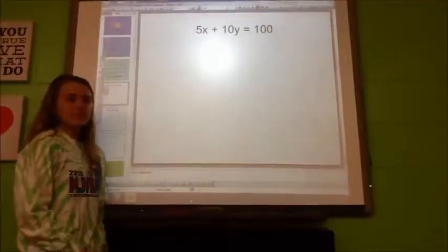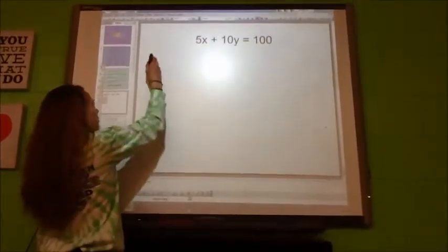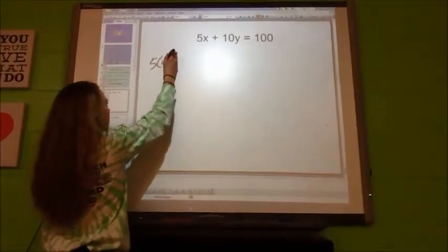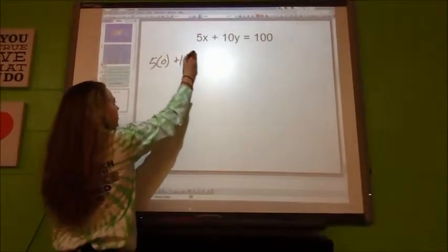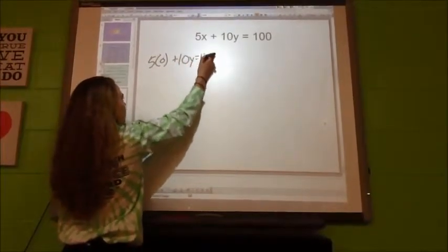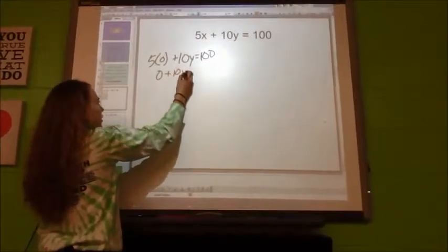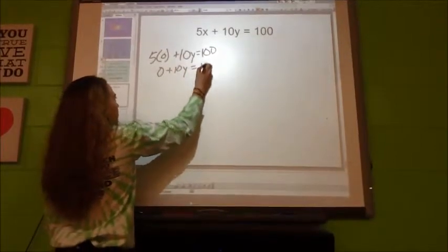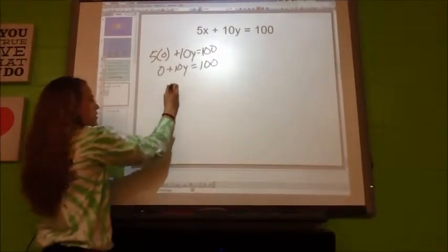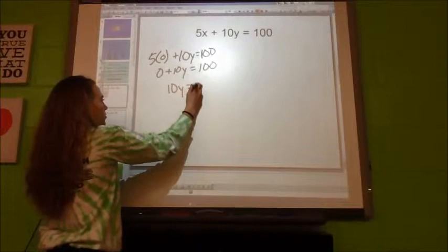To find Y you have to do 5 times 0 plus 10Y equals 100. 5 times 0 is 0 plus 10Y equals 100. 0 plus 10Y is 10Y equals 100.